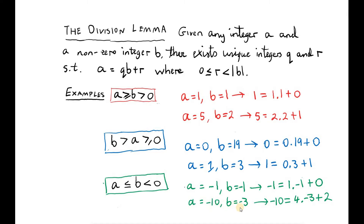Let's take the case where a is minus 10 and b is minus 3. In order to satisfy the conditions of the lemma, we have to choose q equal to 4, so that means we get a value of r which is 2. This is unique — there's no other pair that satisfies the conditions. You can see that 2 is a non-negative number, and it's less than the magnitude of minus 3.